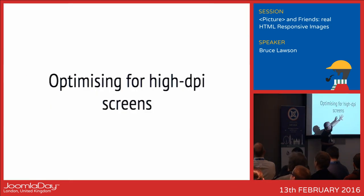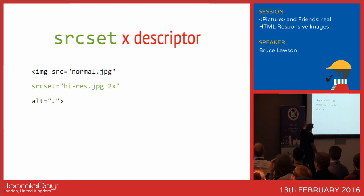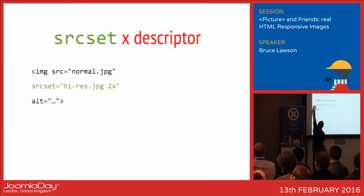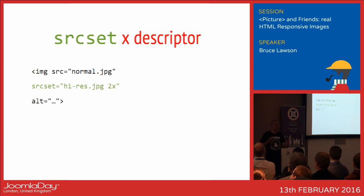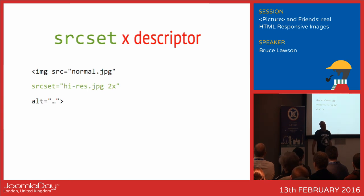The simplest thing you can do is optimise for high DPI screens. You have image src equals normal.jpg — any browser understands this. We have a new attribute called srcset, where you say this high-res version is suitable for screens that have two physical pixels per one logical pixel — a retina device. A browser that doesn't understand srcset just ignores it and grabs normal.jpg. A browser that does understand it decides: am I on a retina screen? If so, grab the high-res version.